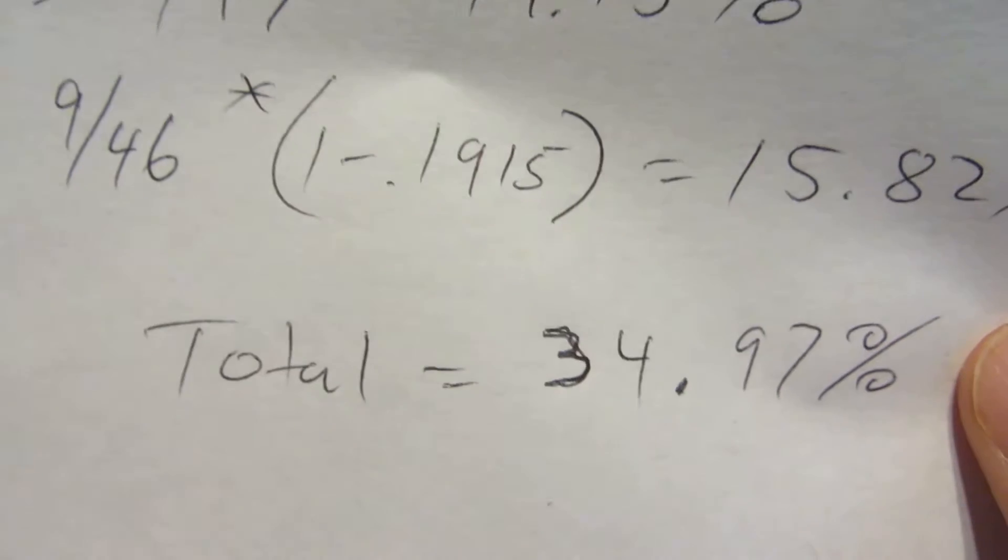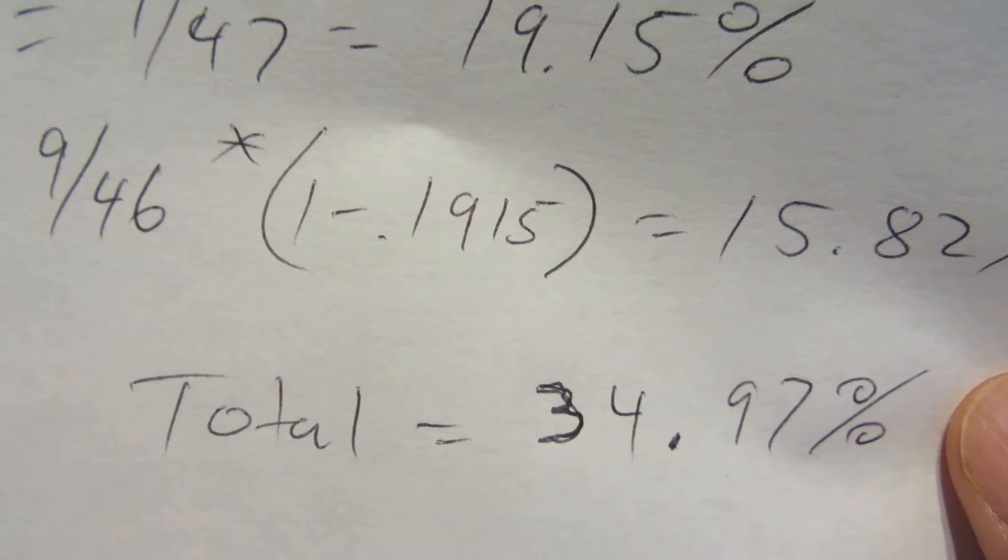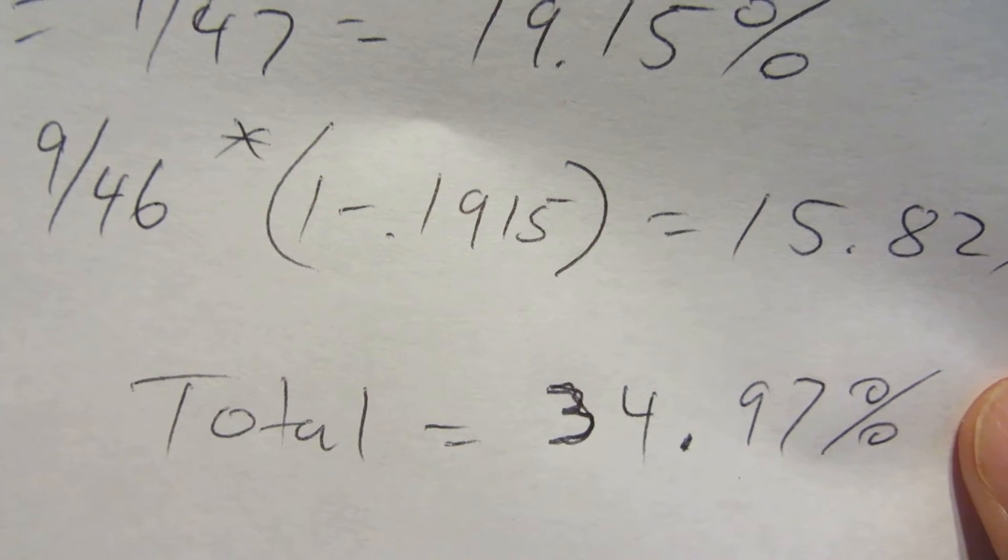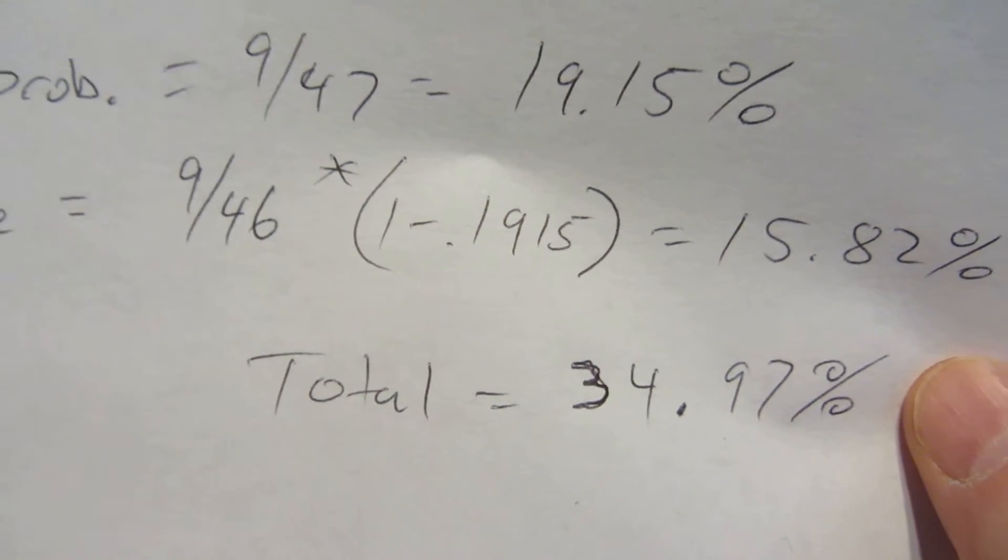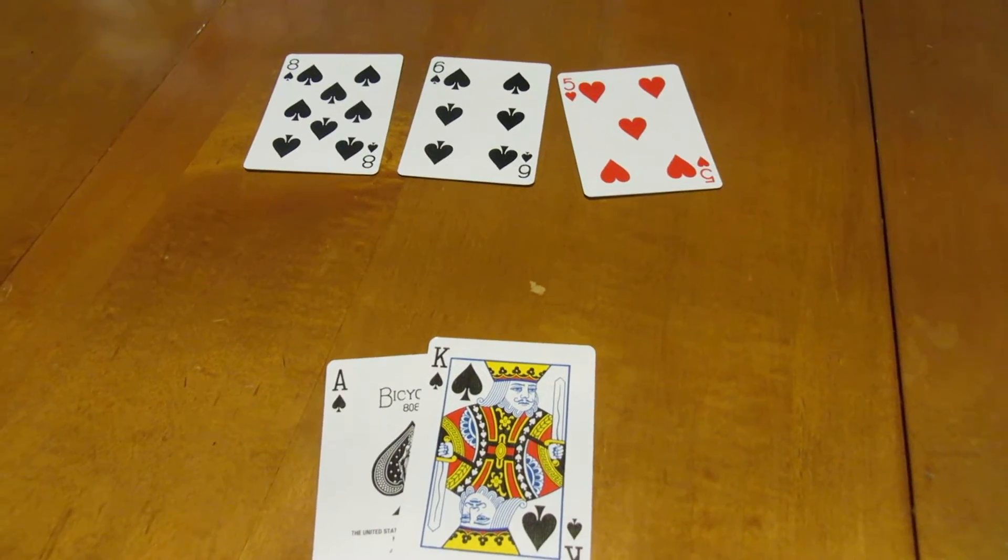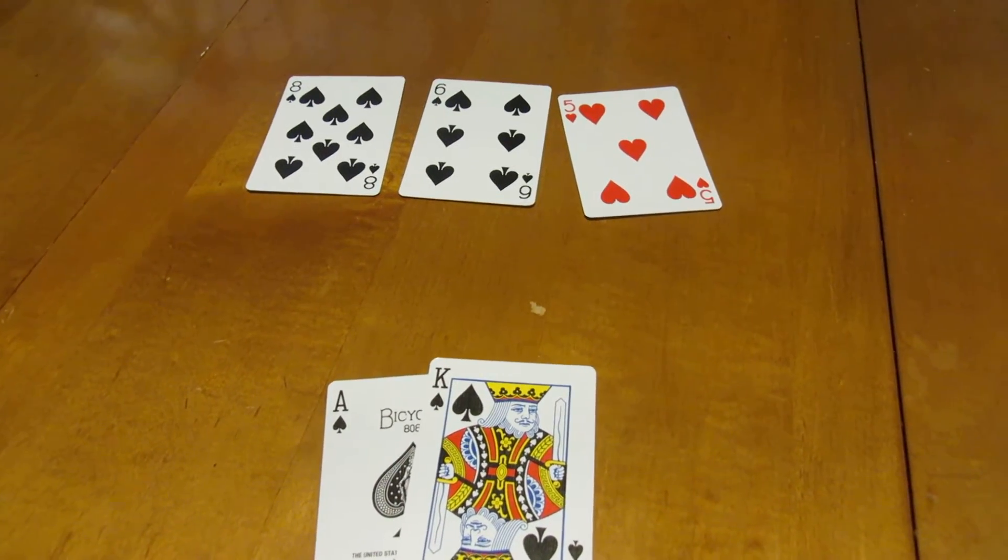Okay? And if you add those two together, it means we'll hit our Flush about 35% of the time almost. So a little over a third of the time, we're going to get the card we want. Okay? So that's how the probability works out when you're sitting here. When you don't know what either of those cards is going to be.